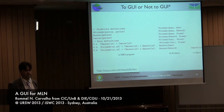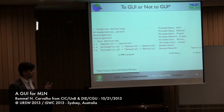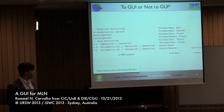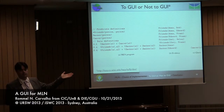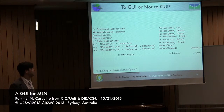You have the evidence file where you specify, for example, that Ana is friends with Bob, and you say who smokes. And then you have the query — which might be: who has cancer, and what's the probability that the person has cancer?